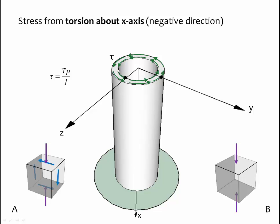At point A, the direction of the shear stress as it flows around the pipe is in the positive y direction, drawn as shown with a green arrow and three other arrows. Notice that the green arrow — the shear stress from torque — is in the opposite direction to the beam stress that occurred from our shear force in the y direction. At point B, following the stress around the pipe, the shear stress is pointing in the negative z direction, drawn with the green arrow and three others to balance the element.